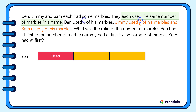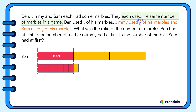So let's draw a bar that is as long as one unit of Ben's marbles. Then we'll divide it into seven equal units. Once we know how big the one unit that represents Jimmy's marbles is, we can draw one more unit so that we have eight units in all. This is seven-eighths of Jimmy's marbles.